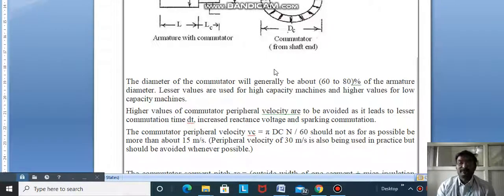Lesser values are used for higher capacity machines and higher values for lower capacity machines. If you go for a higher capacity machine, the commutator size will be reduced. Higher values of commutator peripheral velocity are to be avoided as it leads to lesser commutation time.